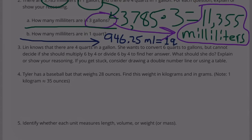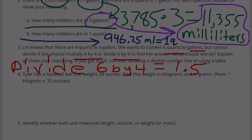Number 3: Lynn knows that there are 4 quarts in 1 gallon. She wants to convert 6 quarts to gallons, but cannot decide if she should multiply 6 by 4 or divide 6 by 4 to find her answer. What should she do? She should divide 6 by 4 and that would give her 1.5. 6 quarts would equal 1.5 gallons.